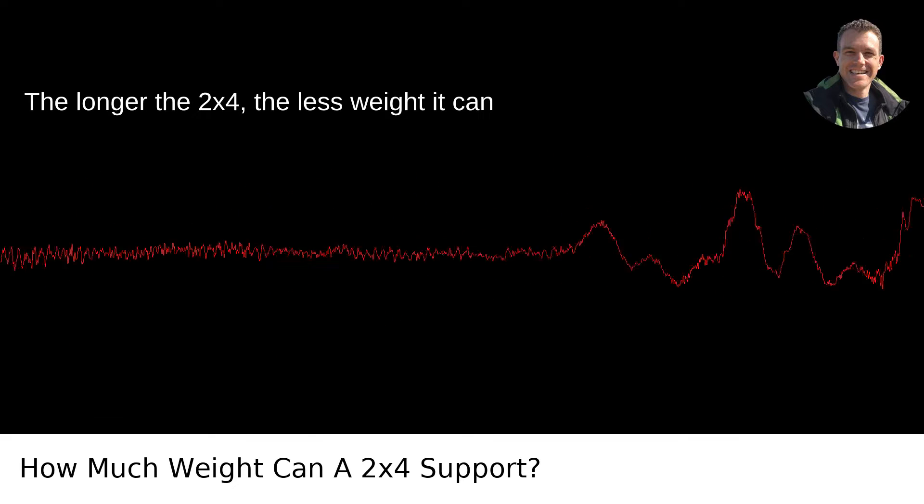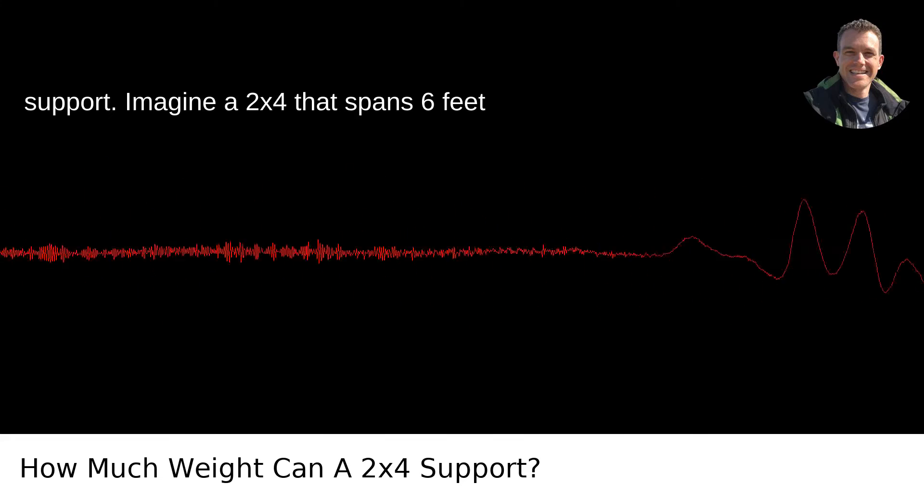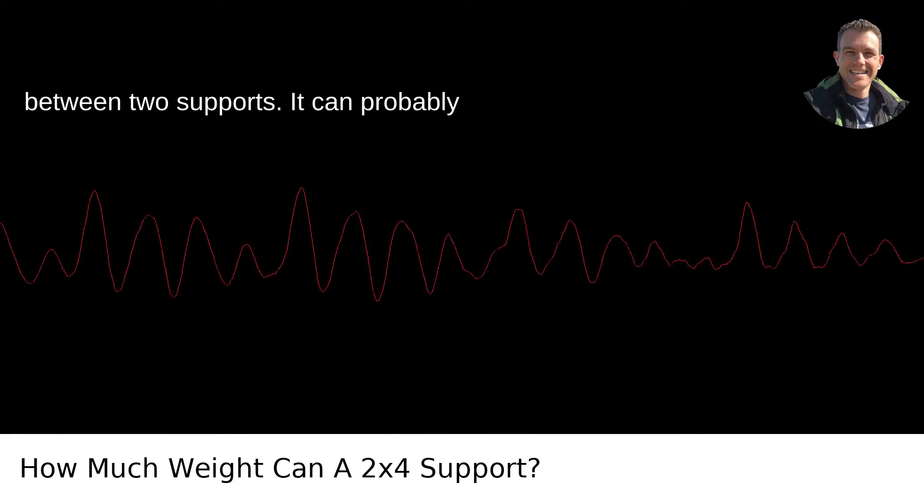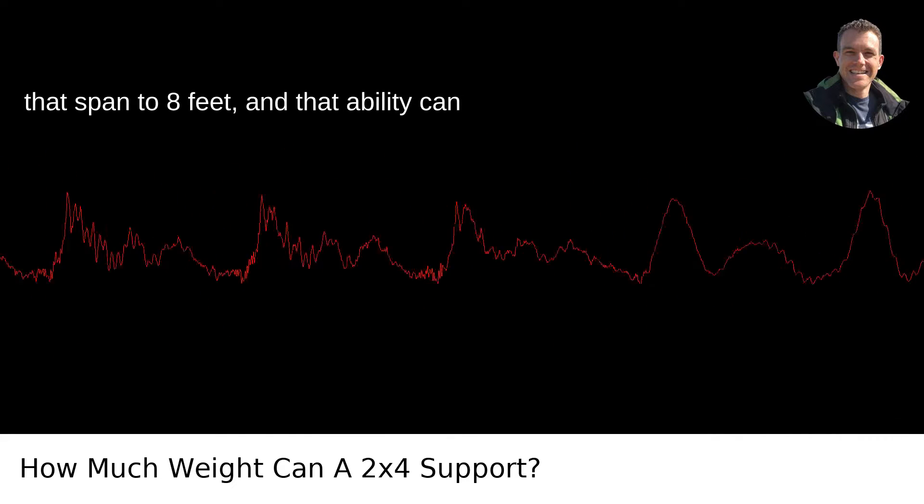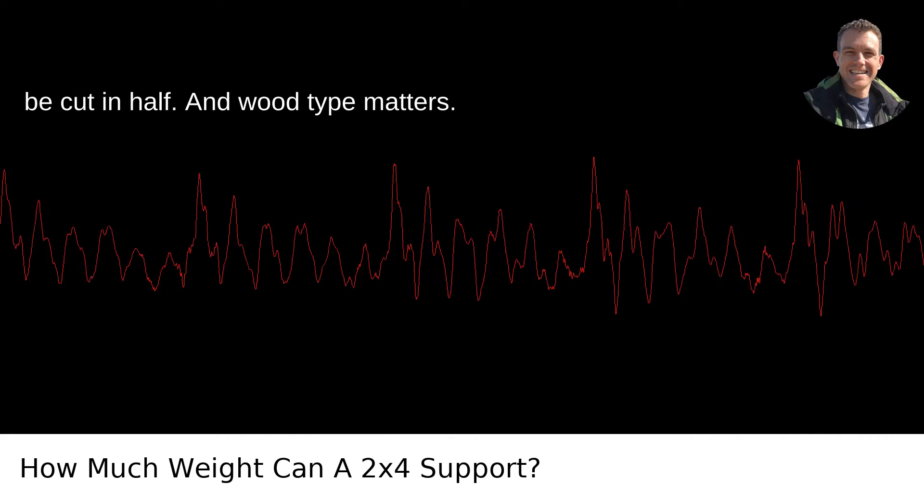The forces have an easier time twisting and buckling that piece of wood. And let's talk about span. The longer the 2x4, the less weight it can support. Imagine a 2x4 that spans 6 feet between two supports. It can probably handle something around 50 pounds. Push that span to 8 feet, and that ability can be cut in half.